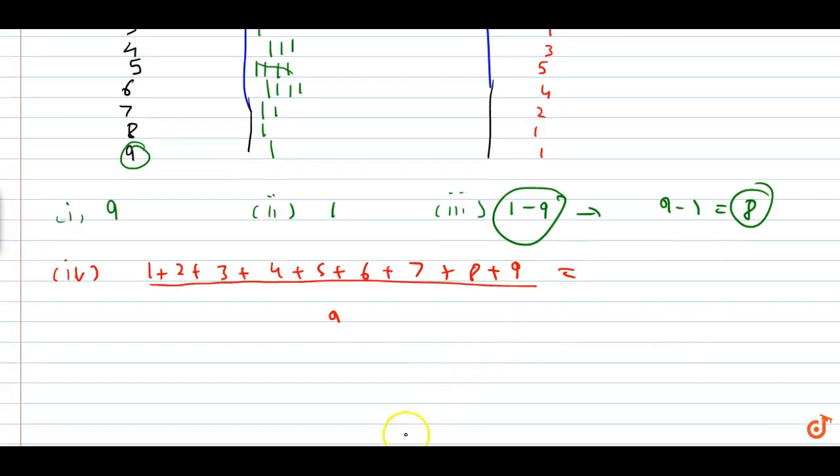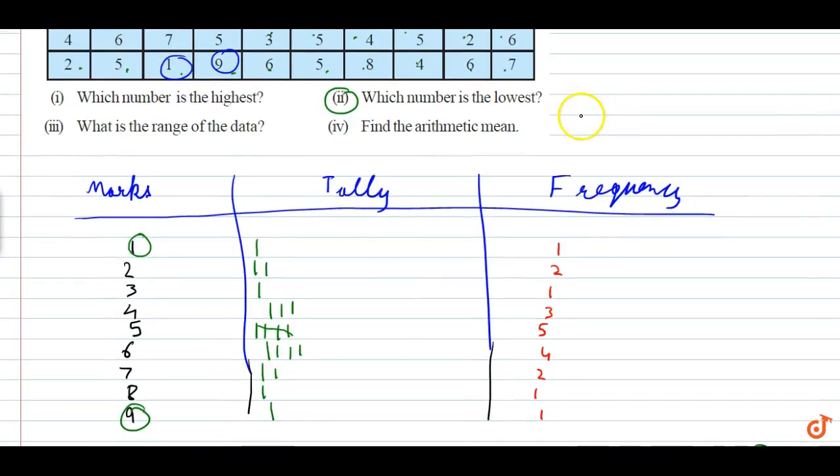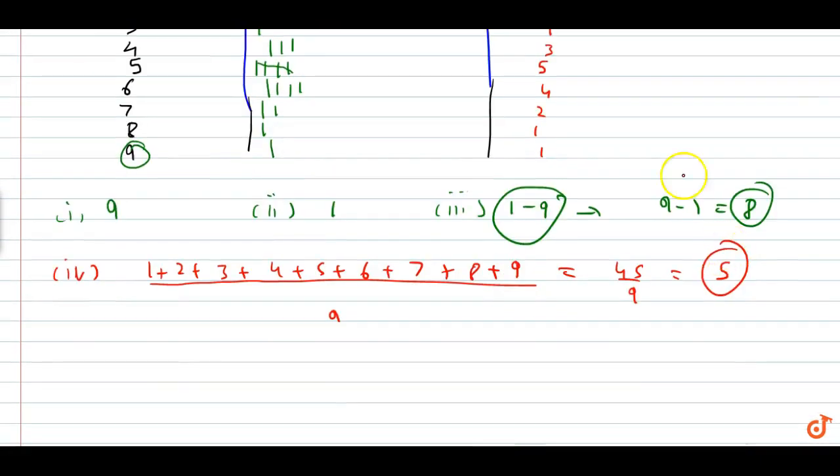Let's calculate: one plus two is three, six, ten, fifteen, twenty-one, twenty-eight, thirty-six, forty-five divided by nine. The average is five. The arithmetic mean is five.